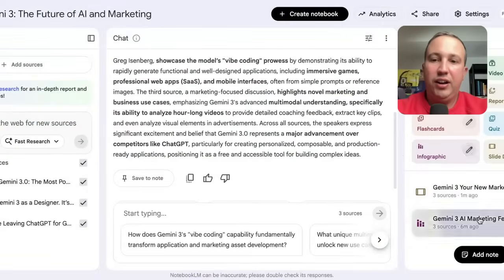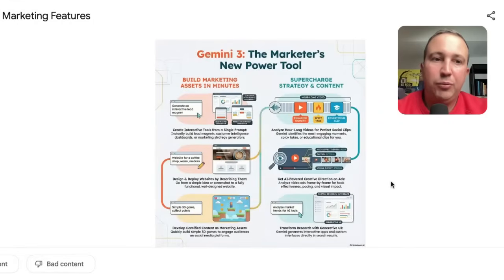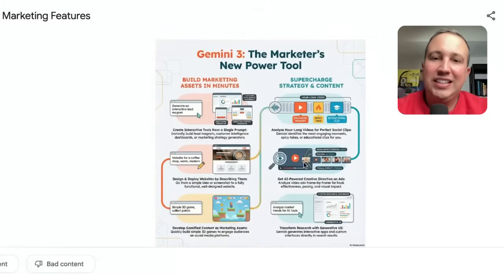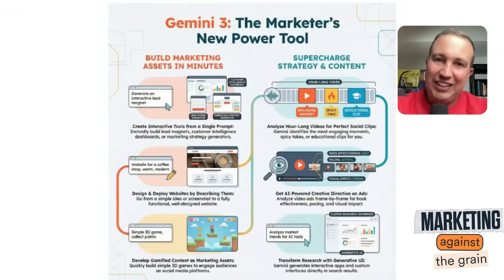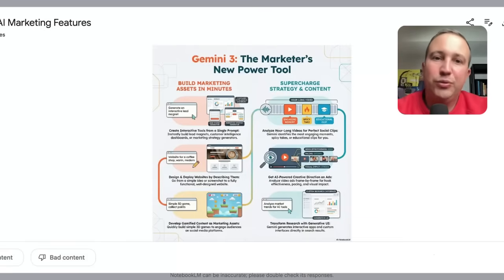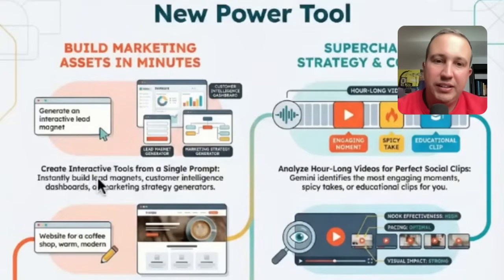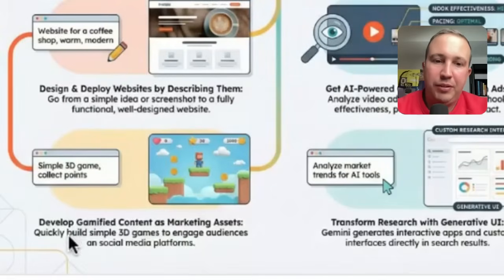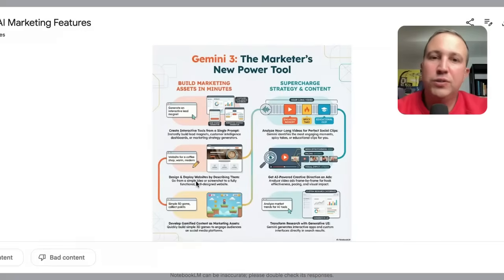I have got an infographic for you right here. I gave Notebook LM the instructions to build an infographic that I could use on LinkedIn, and I asked it to be done in HubSpot brand colors. That's it — I didn't even give it the hex codes. And this is what Notebook LM returned. It took all of the information and generated a pretty decent looking infographic. It's the marketing use cases for Gemini 3: build marketing assets in minutes, create interactive tools from a single prompt. Very cool. Design and display websites by describing them.